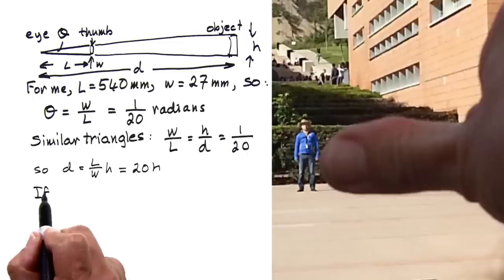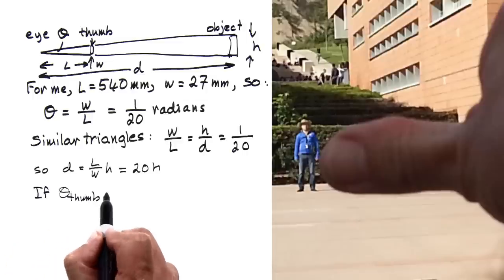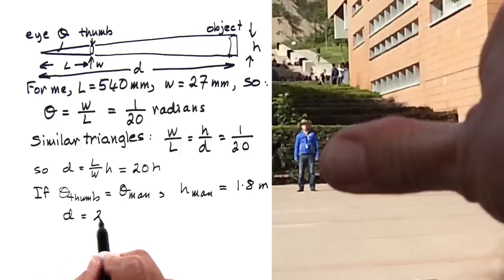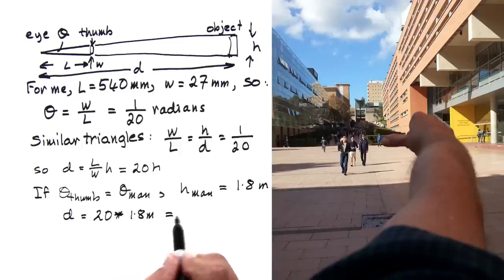So if this man is 1.8 meters tall, and he subtends the same angle as one thumb, then his distance from me is 20 times 1.8 meters equals 36 meters.